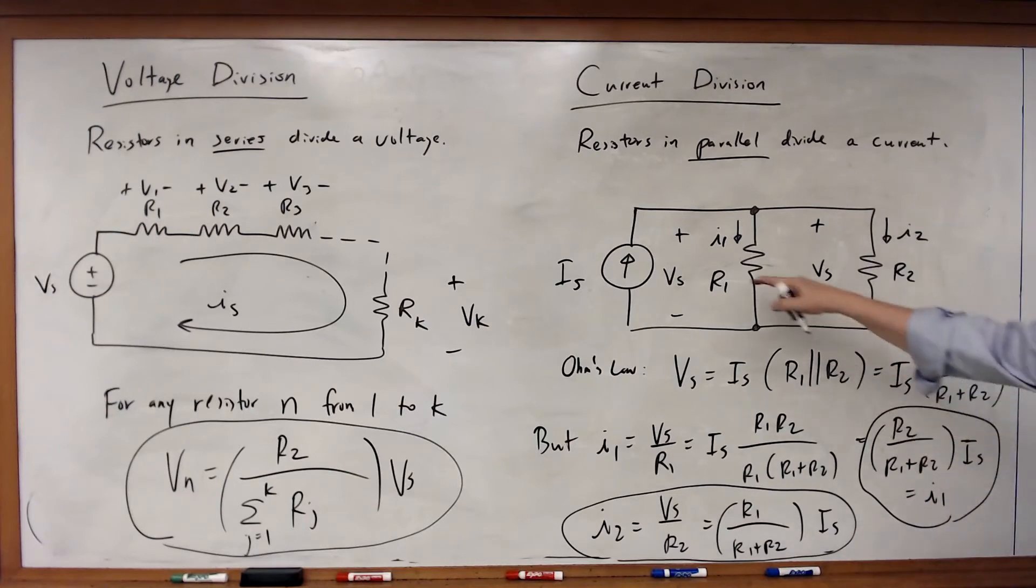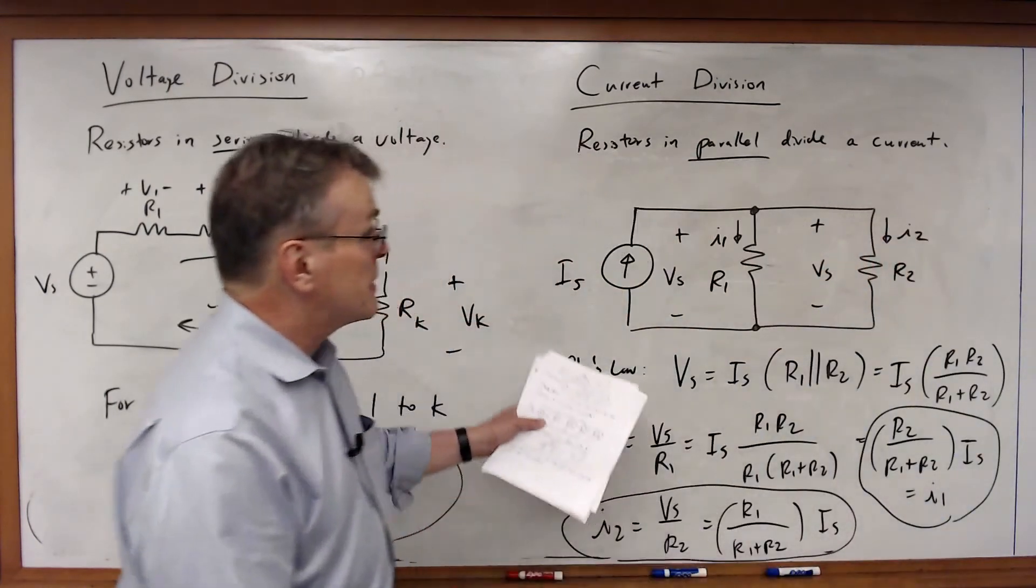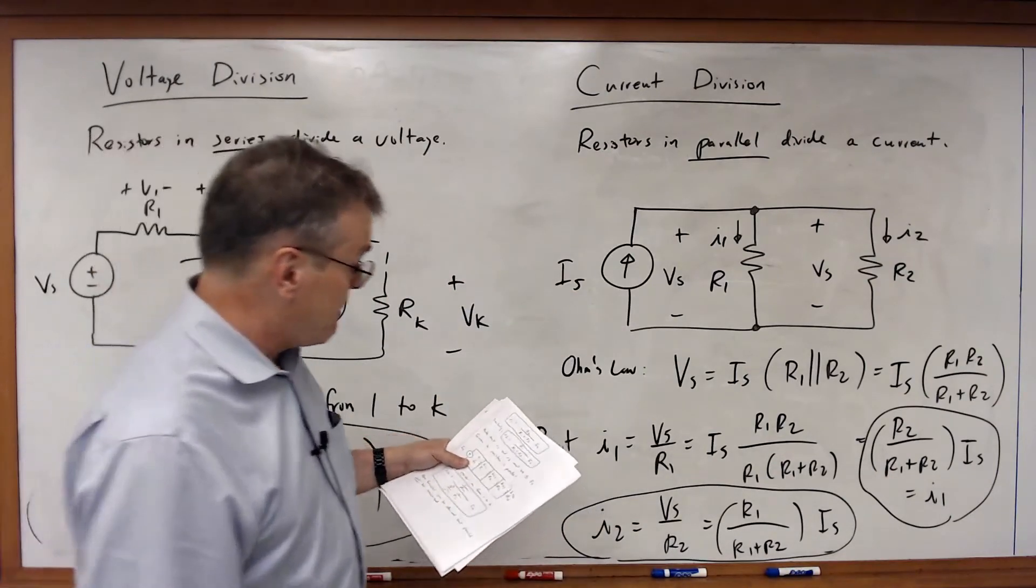Where the input current IS is split into I1 and I2, each of which is less than IS. Obviously, if I combine those two equations together, I will simply get that I1 plus I2 is equal to IS. So here are the equations, and I can once again have K resistors in parallel.